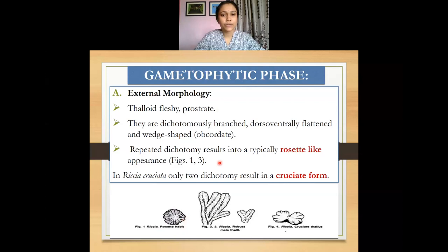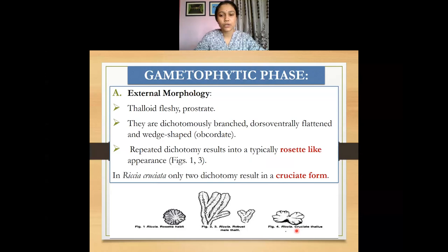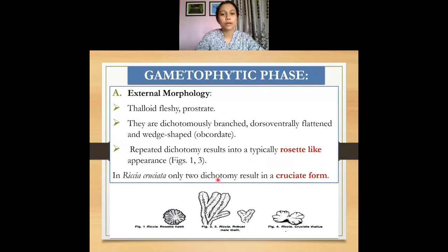The rosette habit results from repeated dichotomous branching of the Riccia thallus. Another form is called the cruciate form, which looks like an axe-like structure — that is why it is named cruciate — and it is seen in the species Riccia cruciata. It results from two dichotomous branchings of the thallus. So depending upon the dichotomous branching, the Riccia thallus can be of rosette or cruciate form.